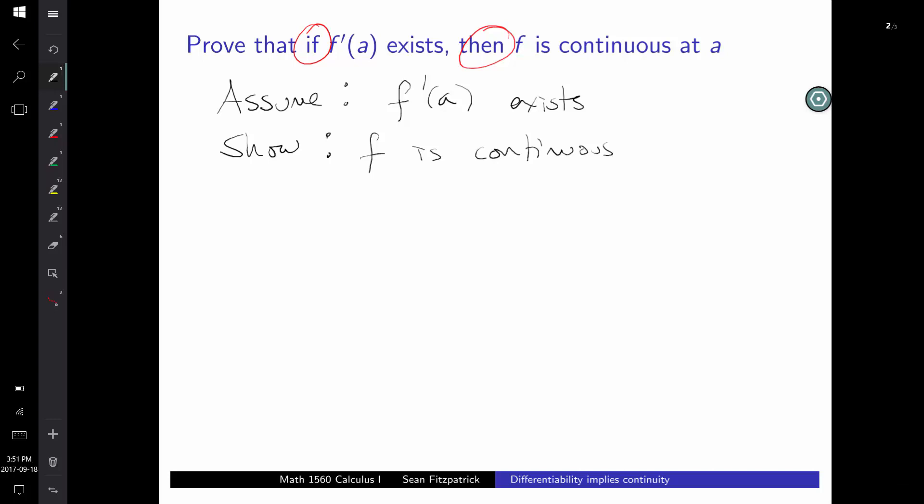And what do we need to show? What we want to show is that F is continuous. And so the way we get from A to B here, how do we make this connection? Well, 90% of a good proof is writing down definitions. If you have good definitions, it's a matter of writing them down and connecting them together.